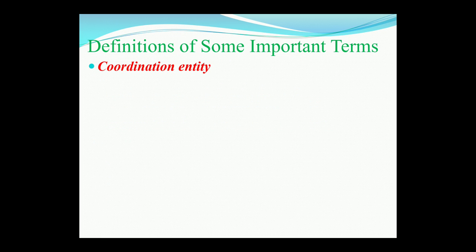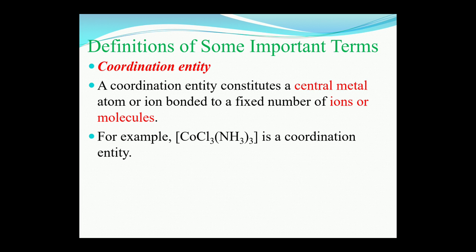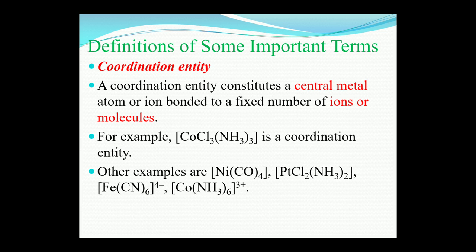Now, talking about a few definitions of important terms: what is a coordination entity? Take a snapshot and let me read out the definition. A coordination entity constitutes a central metal atom or ion bonded to a fixed number of ions or molecules. For example, cobalt with three chloride ions and three ammonia molecules. Other examples include nickel tetracarbonyl, platinum dichloride ammonia, hexacyanoferrate, hexamine cobaltate.